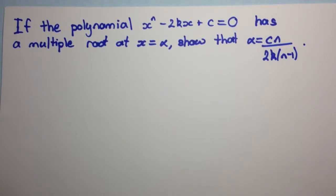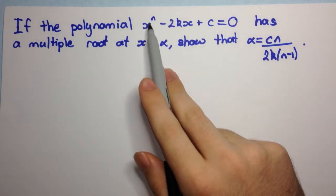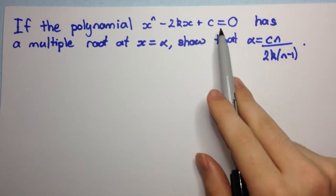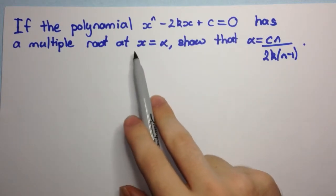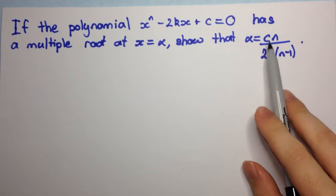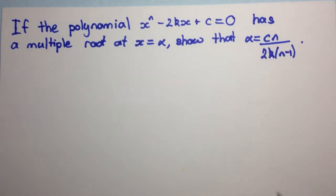Welcome to today's video. We're going to be seeing another sample exam question. The question goes as follows: if the polynomial x to the power n minus 2kx plus c equals zero has a multiple root at x equals alpha, show that alpha equals cn over 2k into n minus 1.